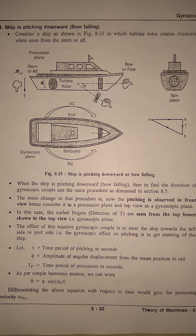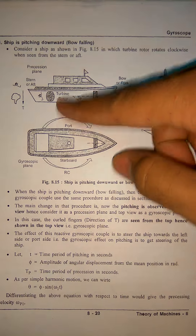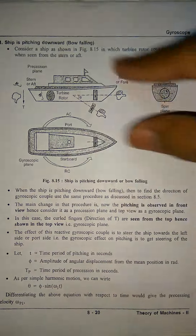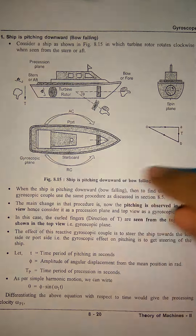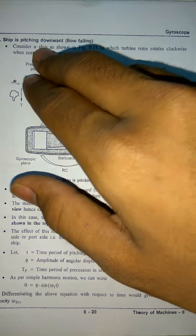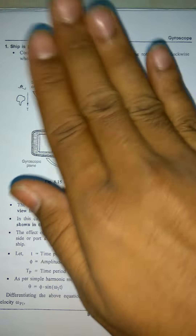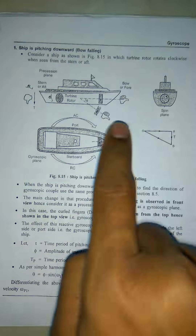Hello friends, today let's start with Theory of Machines 2 and we will be studying the gyroscope, specifically the ship. There are basically two types in the ship. I will be only teaching you how to solve the numericals from the examination point of view. There are three types of motion to the ship: rolling when it just rolls side to side, pitching when it moves up and down, and steering when it takes a turn.